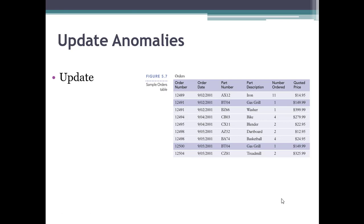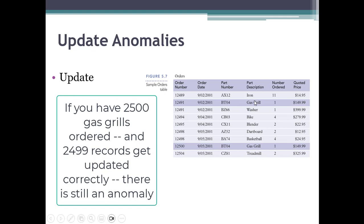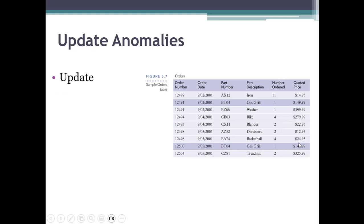An update happens when you're going to edit the data. What happens if gas grill, so let's say this is going to be called the small gas grill. Well, because of the redundant data here, I've got two records, I'm going to have to modify all of them. Or if I don't, if I only notice one of them, I might then have one small gas grill as a description. Same part number, maybe this still says gas grill. Or what if the quoted price gets updated? It can lead to inconsistent data.